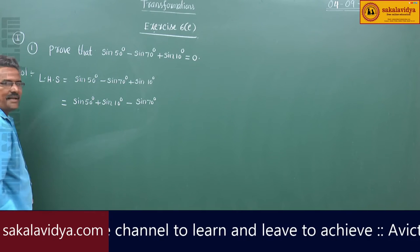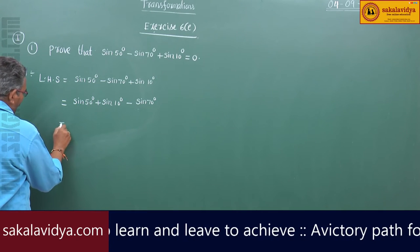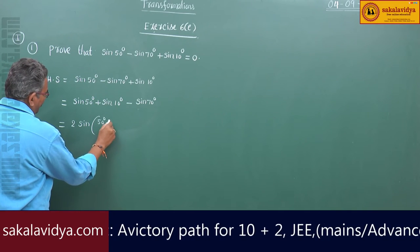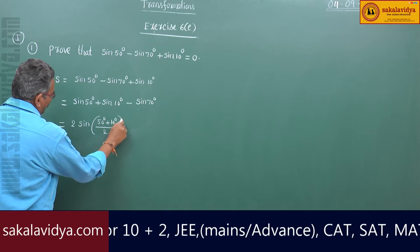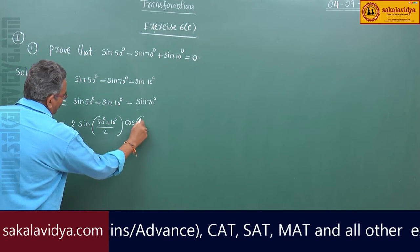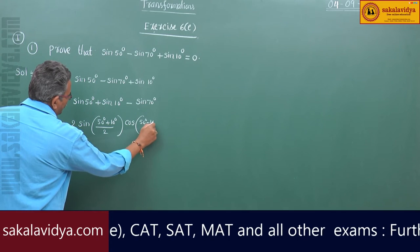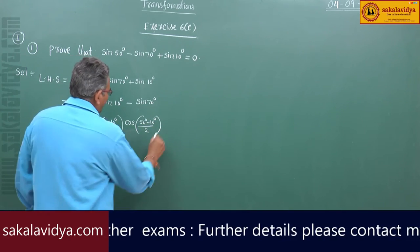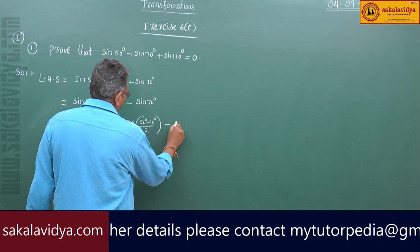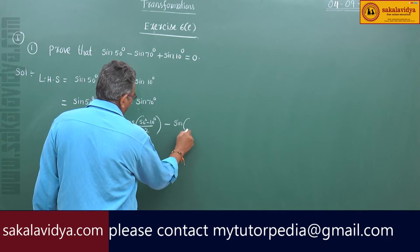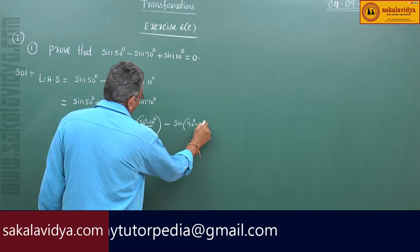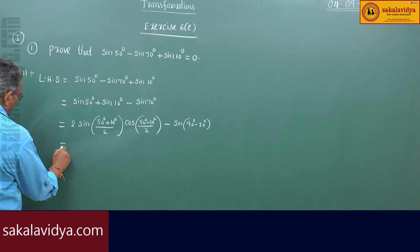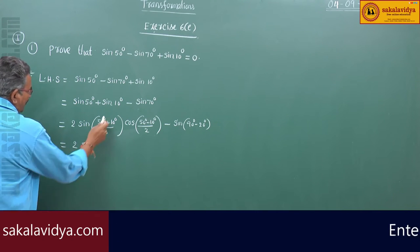Applying the sin C plus sin D formula, this is 2 sin of (50° + 10°)/2 into cos of (50° - 10°)/2, and sin70° can be written as sin(90° - 20°). This gives 2 sin30° into cos20°.